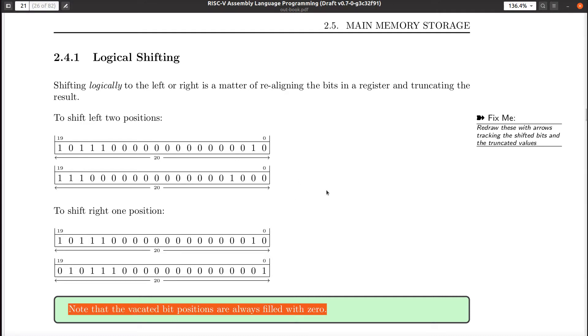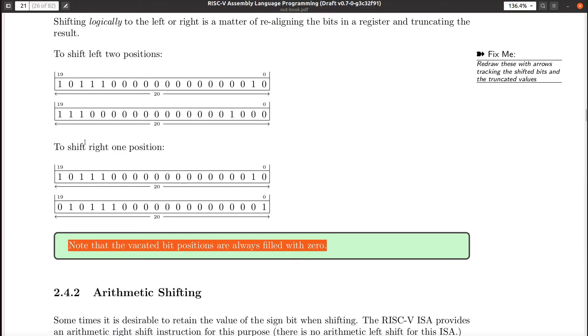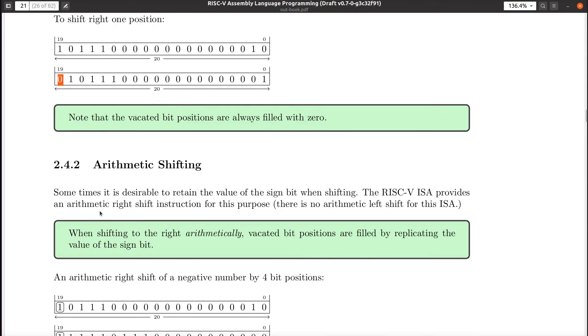Okay? Note down here, any vacated bit positions are always filled with zero. And those are the ones that come in. If you're shifting to the right, that's talking about these guys here. Now, there's the other kind of shifting. It's called arithmetic.